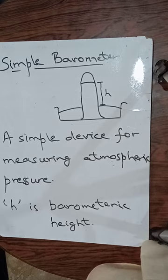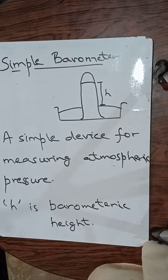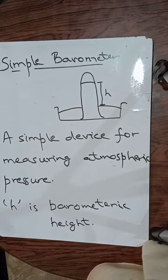It will be noticed that after some time the mercury level will fall down and will come to stay at a certain level. The level of mercury inside the tube is called barometric height, and this height represents the atmospheric pressure on that given day.